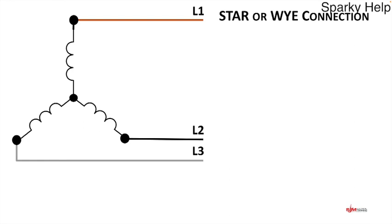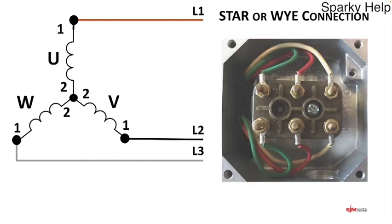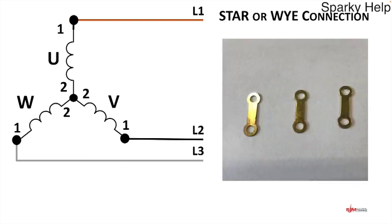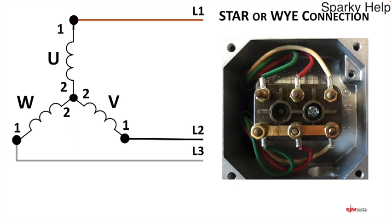These can be connected as permanently star, permanently delta, or a combination of the two. For star connection, with U, V, and W ones on the outside, all the twos connect together in the middle. It works equally with ones in the middle and twos on the outside. The manufacturers provide three brass links that slide across the terminal posts — you short one side out, connect all three links there, and the connection is made.